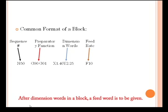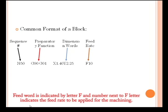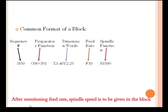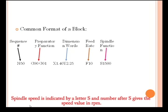After dimension words in a block, a feed word is given. Feed word is indicated by letter F, and the number next to F indicates the feed rate to be applied for machining. After mentioning feed rate, spindle speed is given, indicated by letter S, and the number after S gives the speed value in RPM.